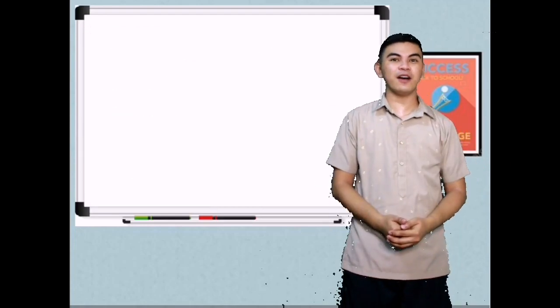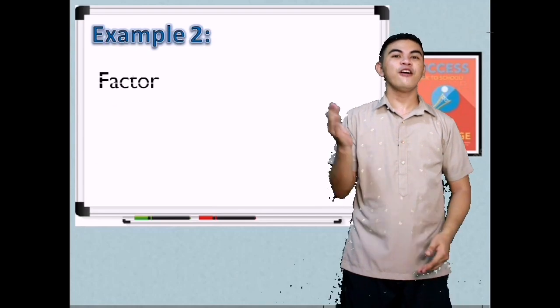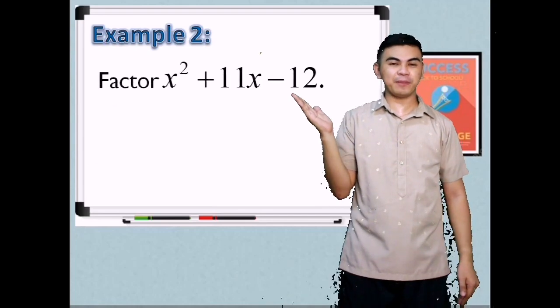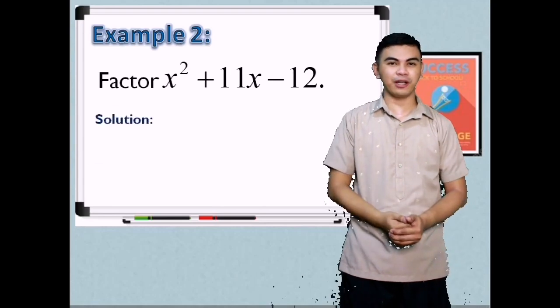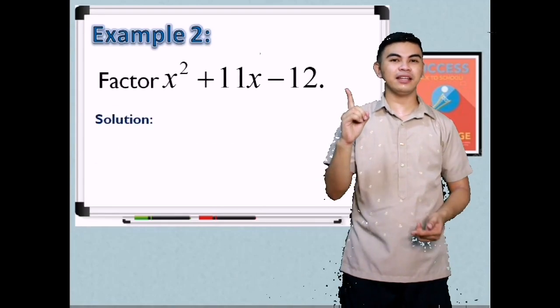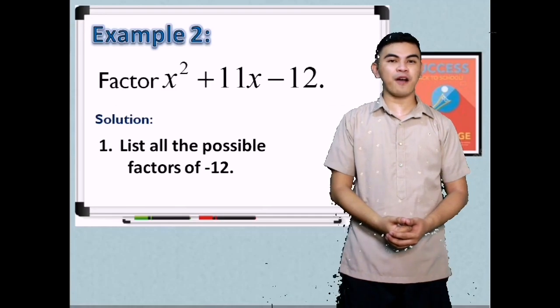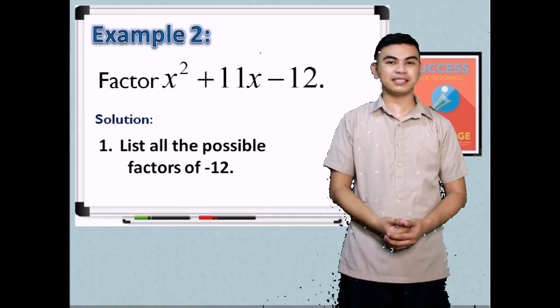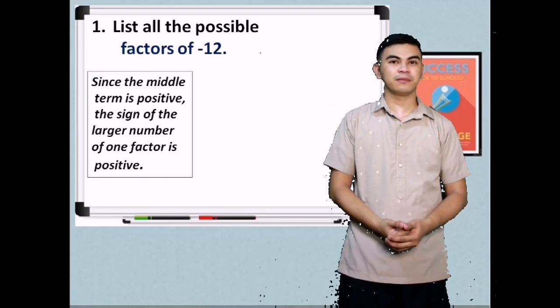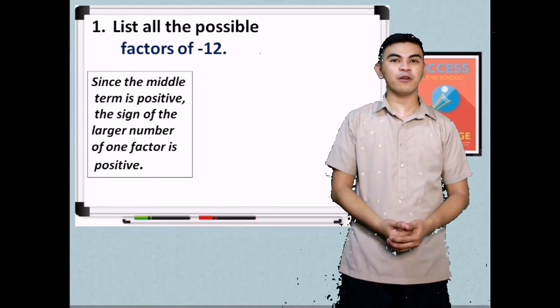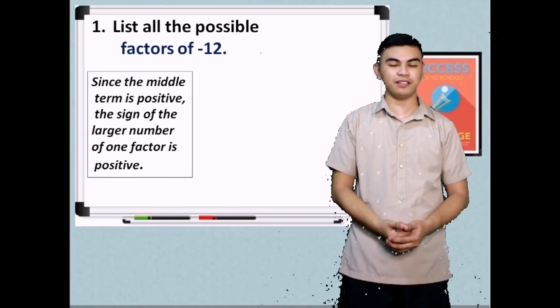So let's have another example. Factor x squared plus 11x minus 12. Let's have the solution. Step 1, list all the possible factors of the last term which is negative 12. Since our middle term is positive, the sign of the larger number of one factor must be positive.